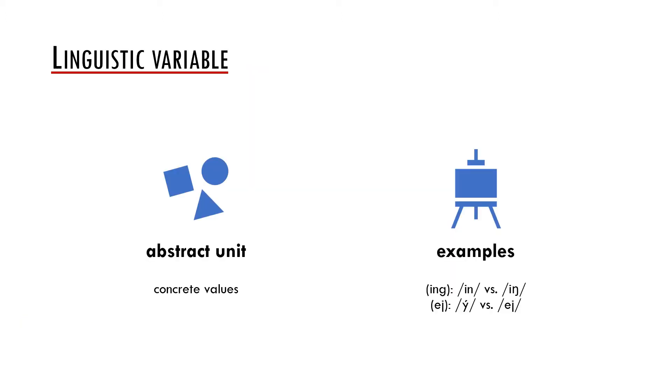In the last presentation we already introduced this concept briefly. We said that the linguistic variable is an abstract unit which serves us for quantitative description of language variation. This abstract unit can take certain values in the speech of an individual.